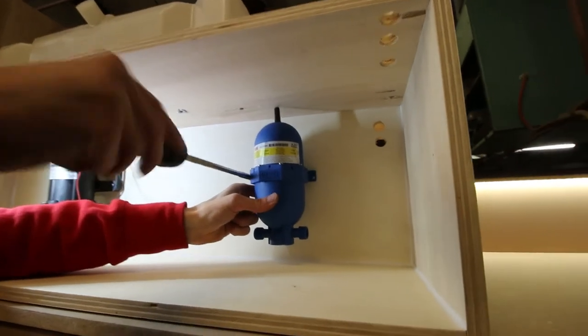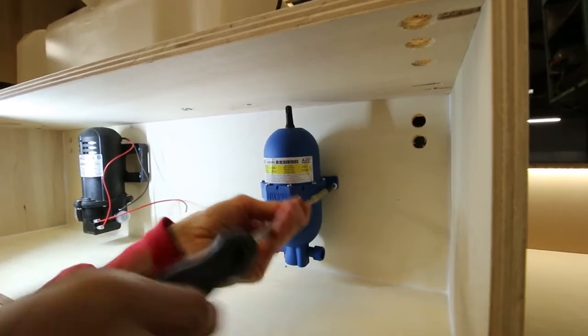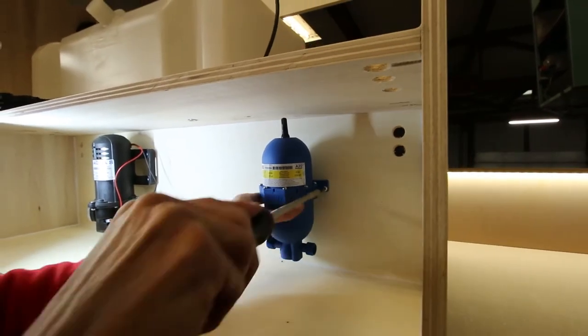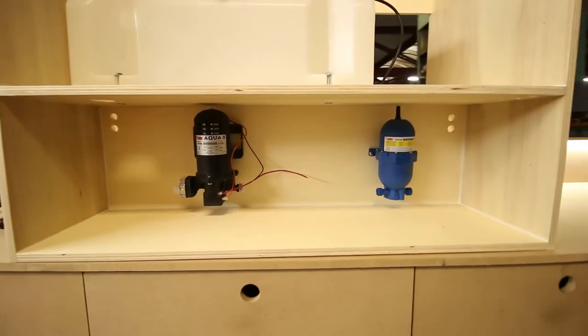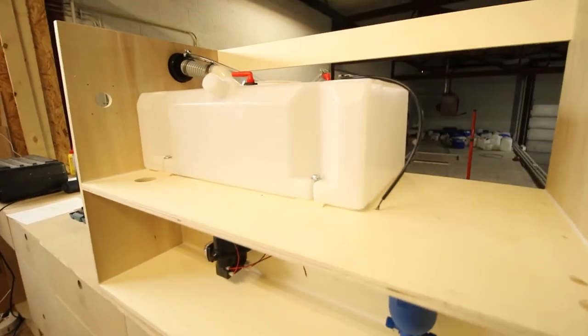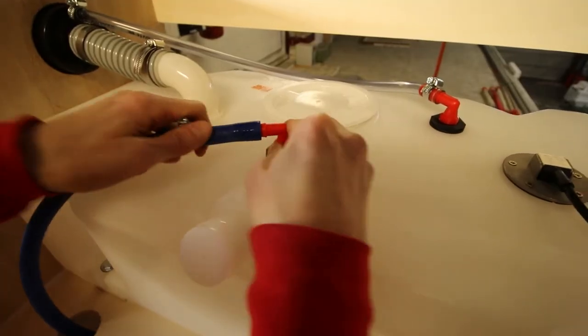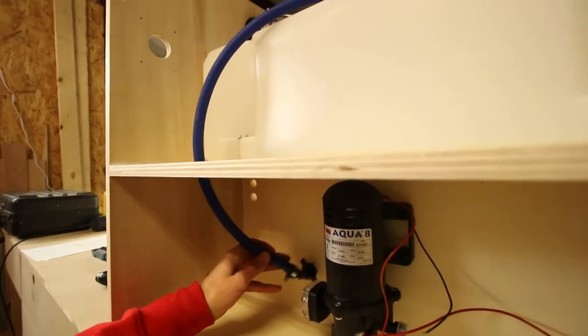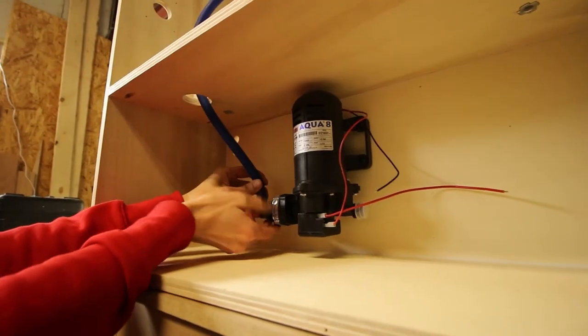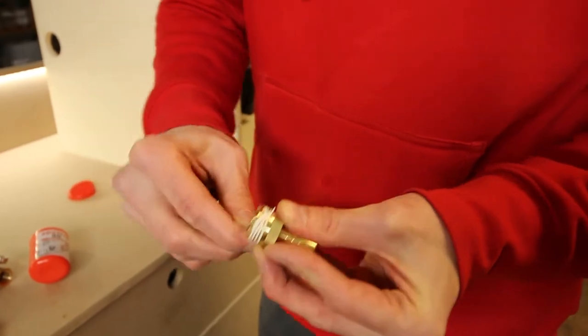We then installed the Fiamma A20 expansion vessel. This expansion vessel extends the life of the pump as it ensures a stable pressure in the system. As a result, the pump does not continuously cycle on and off. The hoses are attached to the hose tails with hose clamps. We have provided the threaded connections with Loctite 55 thread sealant.